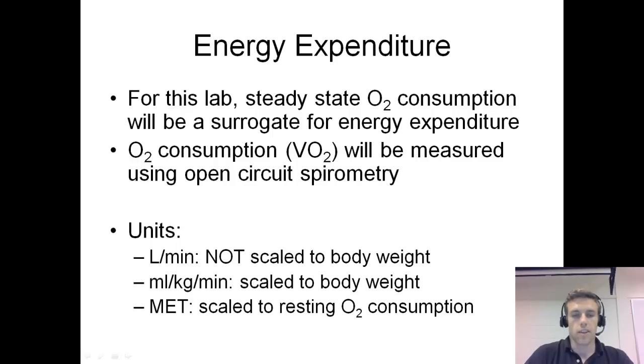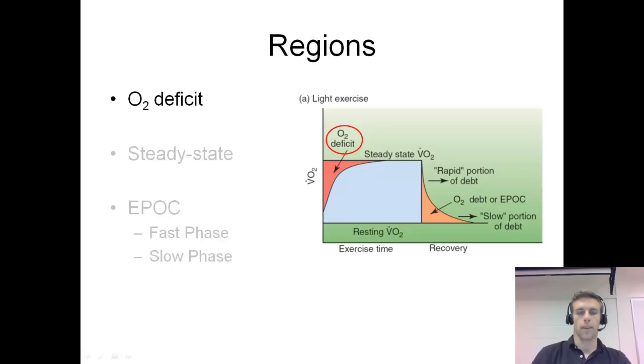Another unit that we might use is the MET. A MET is just scaled to your resting oxygen consumption, and your resting oxygen consumption is 3.5 milliliters per kg per minute. It's just a way of measuring the milliliters per kg per minute, and it's a scale where a MET equals 3.5 milliliters per kg per minute.